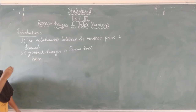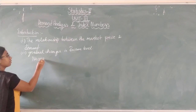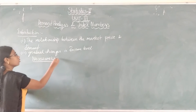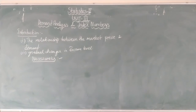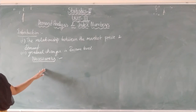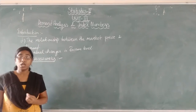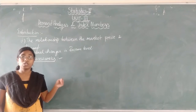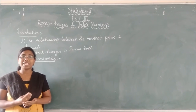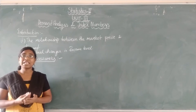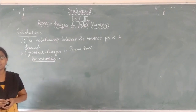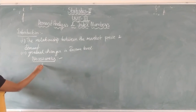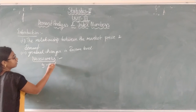The first type is necessaries. Which goods are necessary goods? The primary goods are the necessary goods — the goods or commodities which satisfy our basic needs. What are the basic needs? Food, shelter, and clothing. Whatever goods satisfy our basic needs are called necessaries. Examples for necessaries are food, clothing, and shelter.